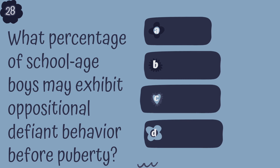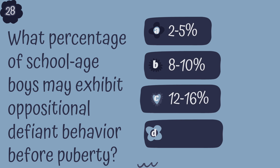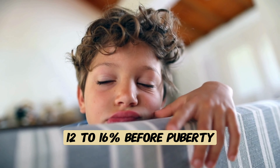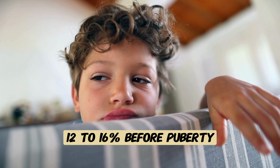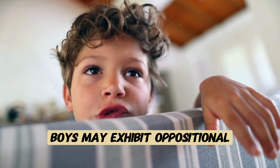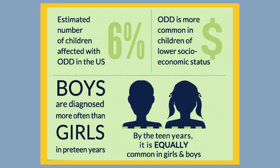Question 28. What percentage of school-age boys may exhibit ODD behavior before puberty? A. 2 to 5 percent, B. 8 to 10 percent, C. 12 to 16 percent, or D. 20 to 25 percent? The correct answer is C, 12 to 16 percent. Before puberty, a percentage of school-age boys may exhibit oppositional defiant disorder behavior within the range of 12 to 16 percent.